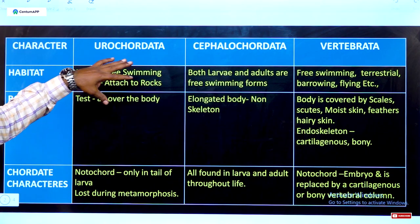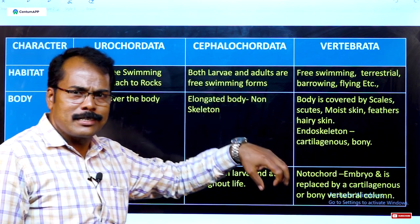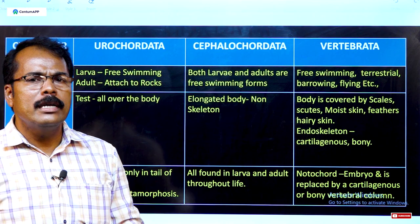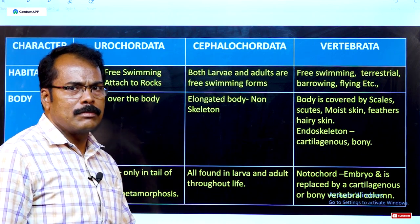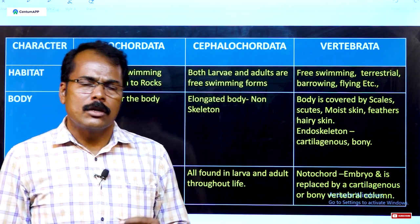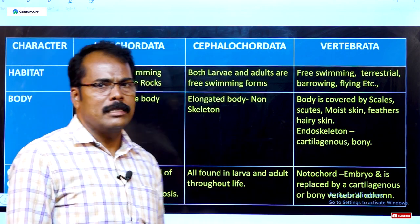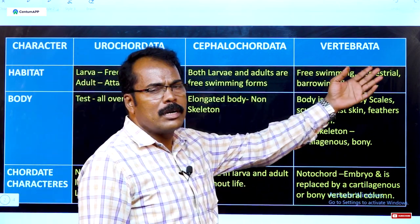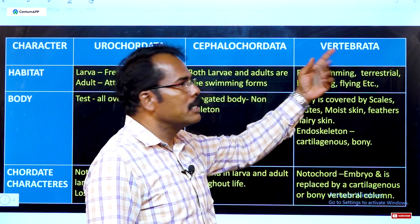In Urochordata, the notochord is extended only in the larval tail region. In Cephalochordata, the notochord is extended up to the head region, which is why they are called Cephalochordata. In Vertebrata, the notochord is replaced with the vertebral column.